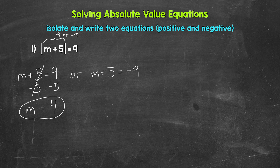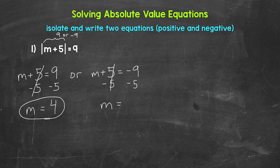Now let's solve m plus 5 equals negative 9. We need to isolate m, so let's subtract 5 from the left side, which means we need to subtract 5 from the right side as well. These 5s cancel each other out. m is now isolated, so we have m equals negative 9 minus 5, which gives us negative 14. So m equals negative 14. Those are our two solutions.